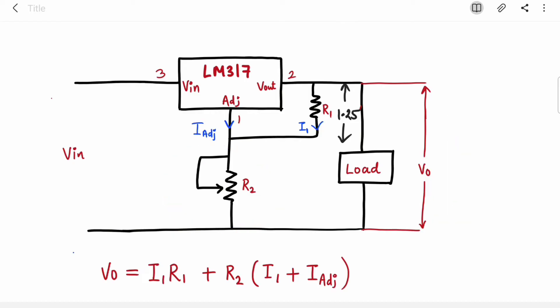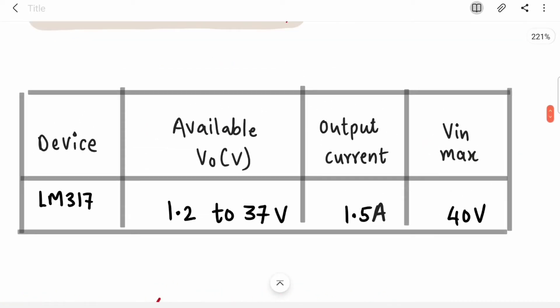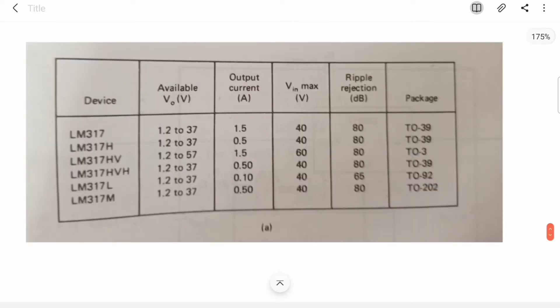Now let's see some more specifications about LM317. For this IC, minimum available voltage is 1.2 volts and maximum available voltage is 37 volts. Output current is 1.5 amperes, and Vin max is 40 volts. Looking at more ICs from the LM317 series, LM317 HV gives you voltage up to 57 volts.